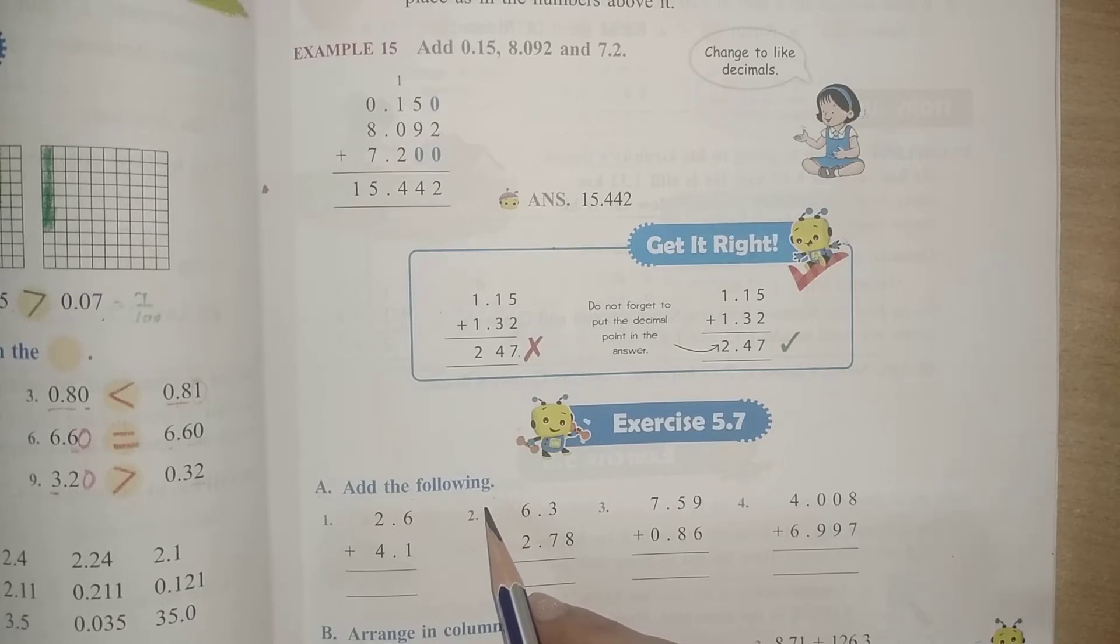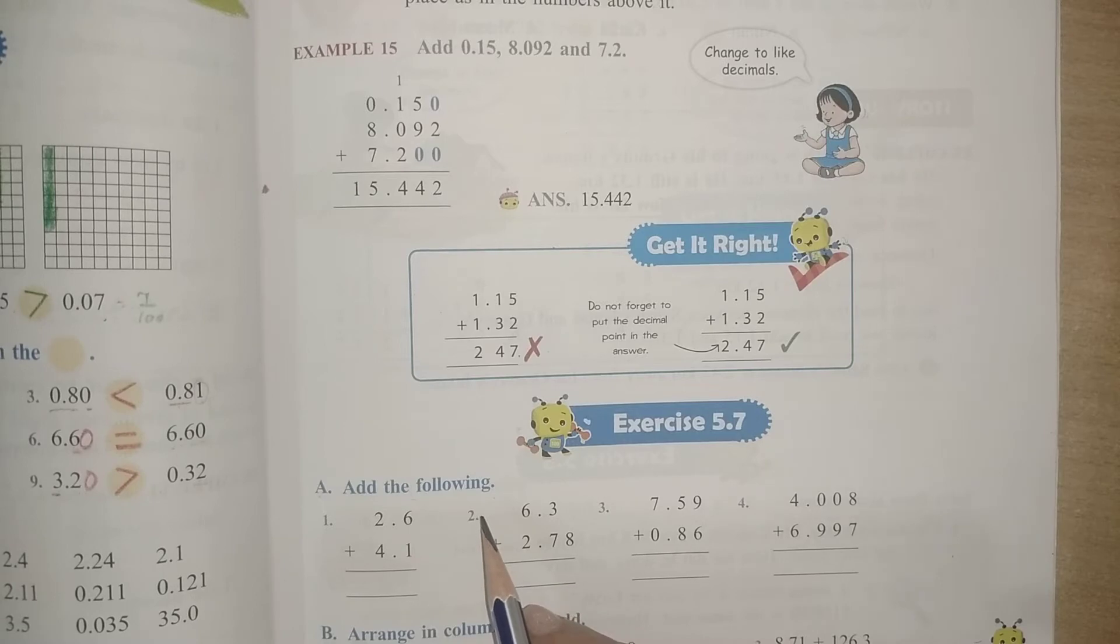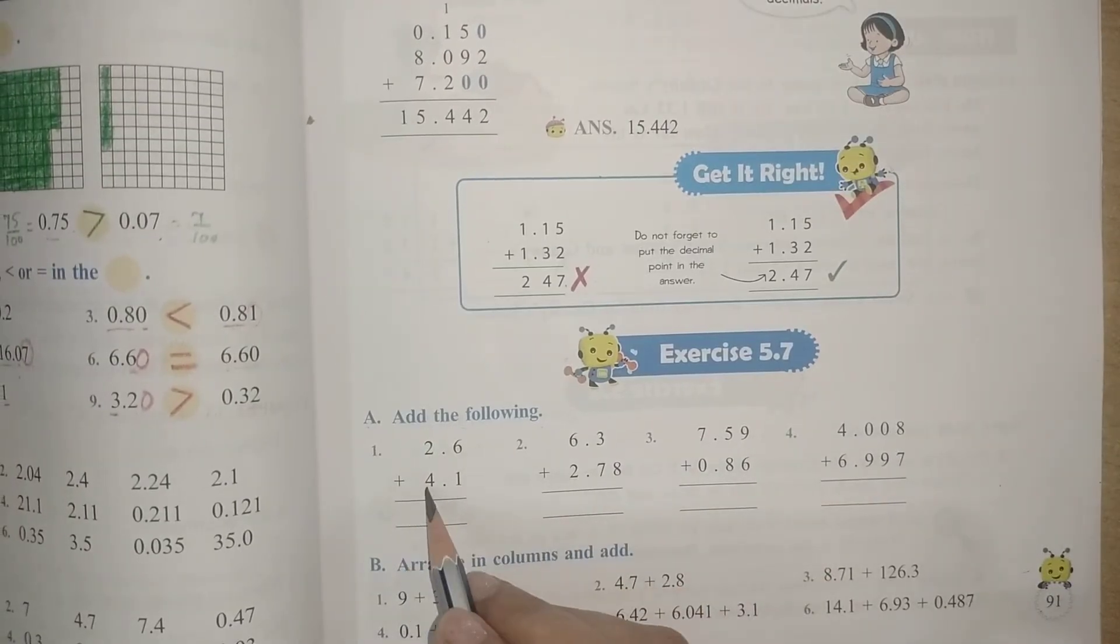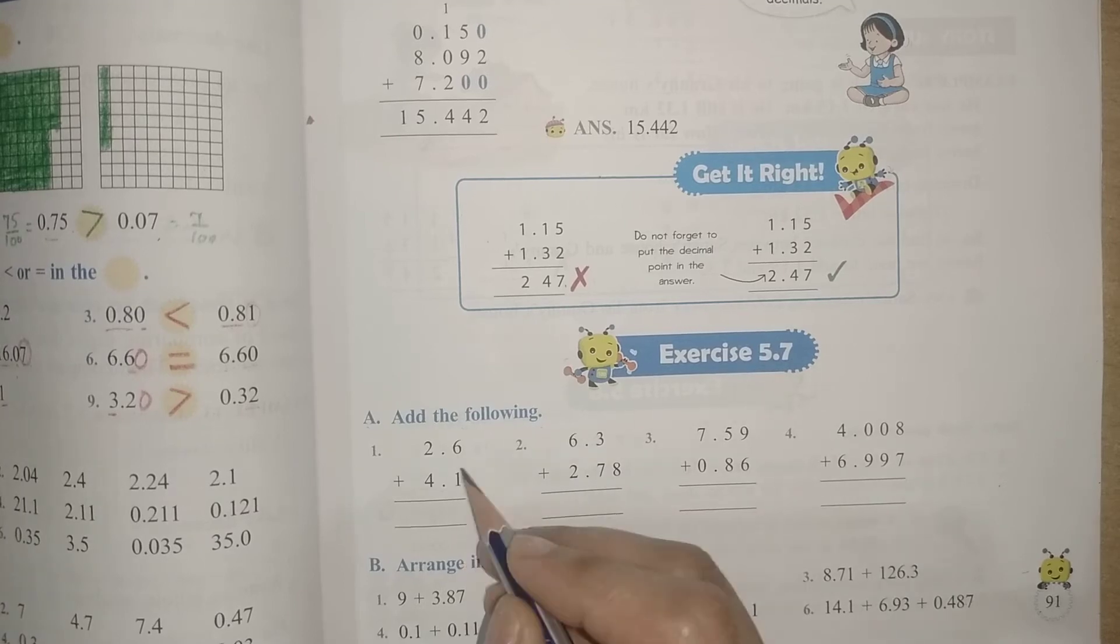Here it is 2.6 plus 4.1. It is already arranged in column, so let us start adding. 6 plus 1 is 7, then point, 2 plus 4 is 8.